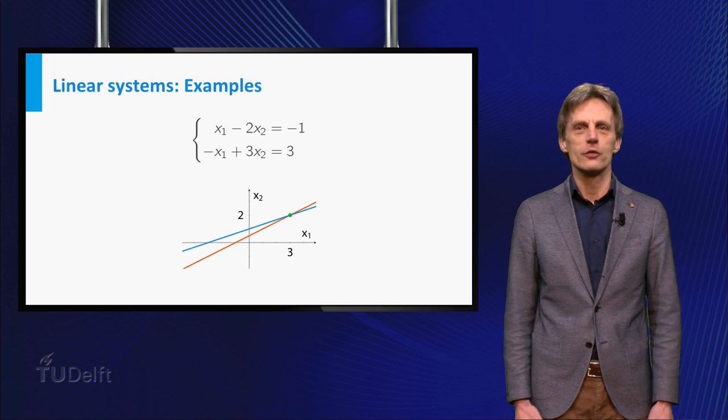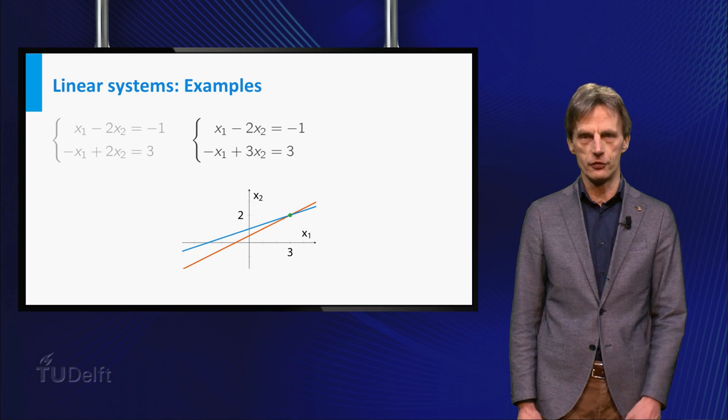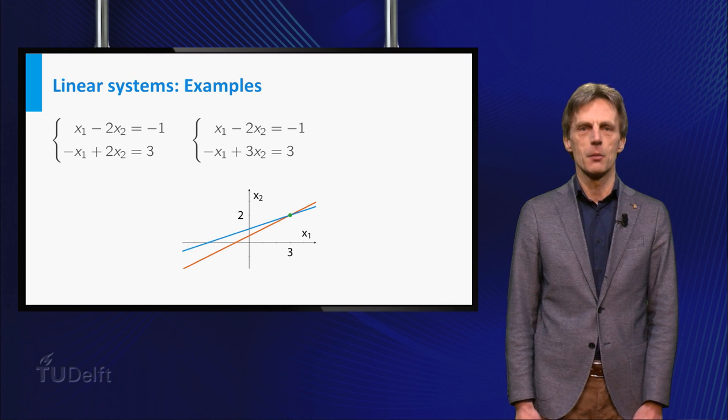This, of course, is not always the case when you consider two lines in the plane. For example, have a look at this system. x1 minus 2 times x2 equals minus 1, minus x1 plus 2 times x2 equals 3.